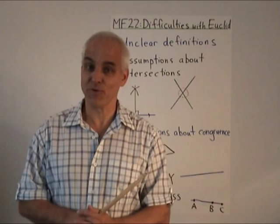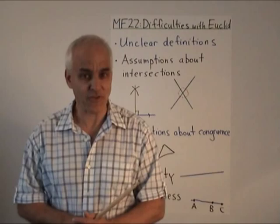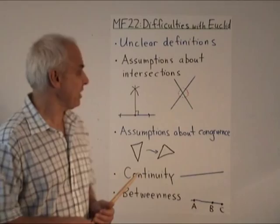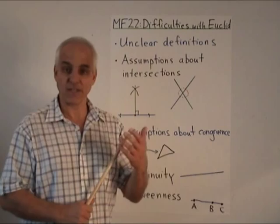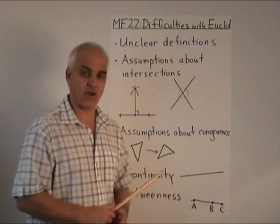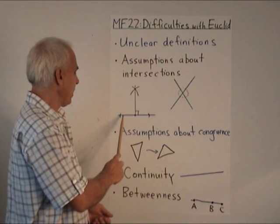However, there are other difficulties too, as began to be appreciated in the 19th century. Euclid makes many assumptions which aren't officially built into his postulates. For example, he makes assumptions about the intersections of things. He assumes that two lines that cross like this actually meet at a point. Although that's physically very intuitively reasonable, it's not actually a consequence of his postulates and definitions.